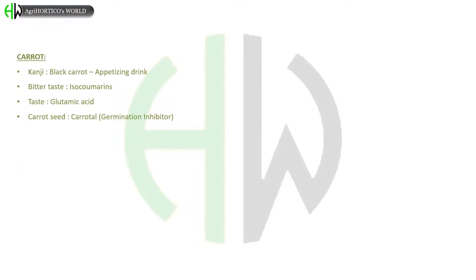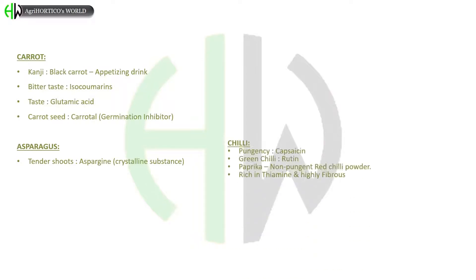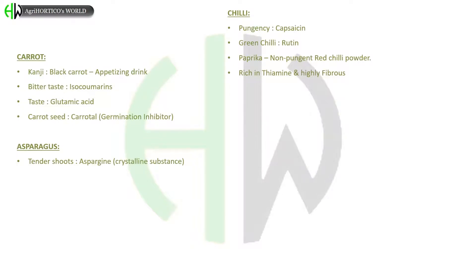In carrot, Kanji — which is prepared from black carrot — is an appetizing drink. Bitter taste in carrot is due to isocoumarins. Taste in carrot is due to the presence of glutamic acid. Carrot seed contains carotin, which is a germination inhibitor. In asparagus, tender shoots contain asparagin, a crystalline substance. In chili, pungency is due to the presence of capsaicin. Green chili contains rutin. Paprika is a non-pungent red chili powder; it is rich in thiamine and highly fibrous.